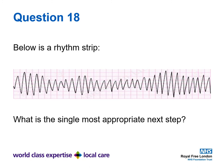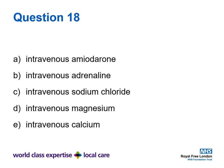Question eighteen. Below is a rhythm strip. What is the single most appropriate next step? Is it to administer A) intravenous amiodarone, B) intravenous adrenaline, C) intravenous sodium chloride, D) intravenous magnesium, or E) intravenous calcium?